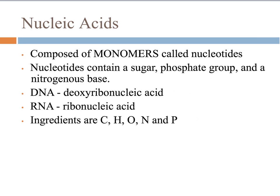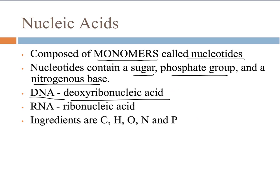Quickly on nucleic acids: nucleic acids are polymers, and their monomer is called a nucleotide. The nucleotide itself has three parts — a sugar, a phosphate group, and a nitrogen base. DNA stands for deoxyribonucleic acid, and RNA is ribonucleic acid. The elements involved are carbon, hydrogen, oxygen, nitrogen, which we saw in proteins, and now phosphorus from the phosphate group.